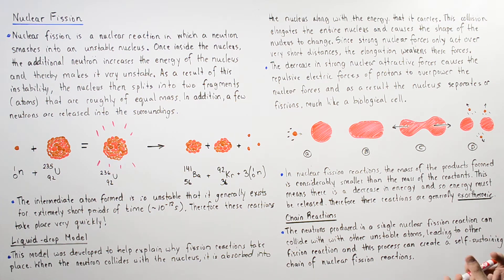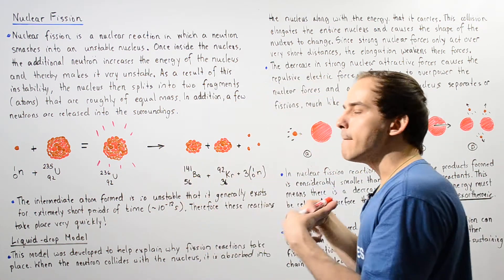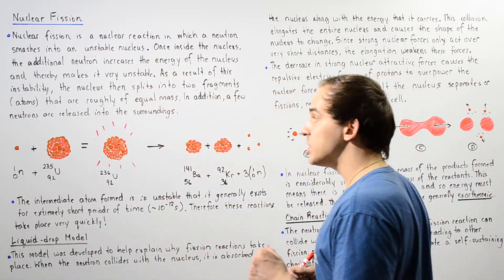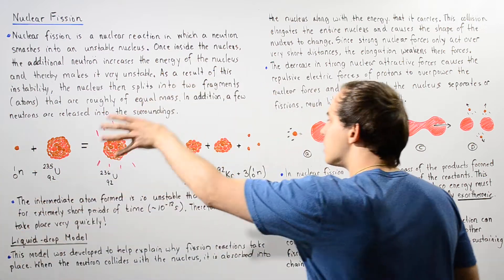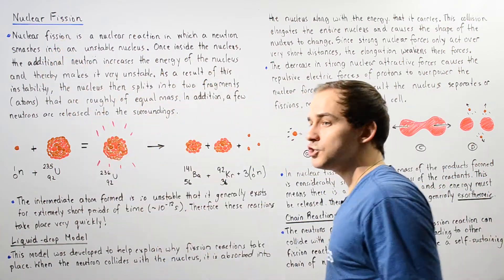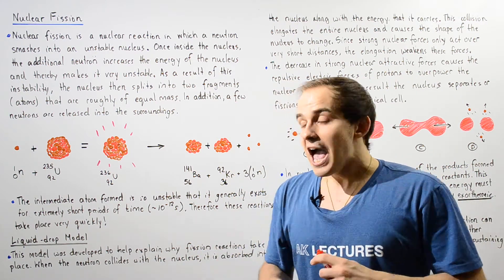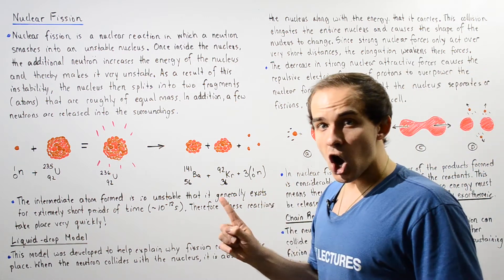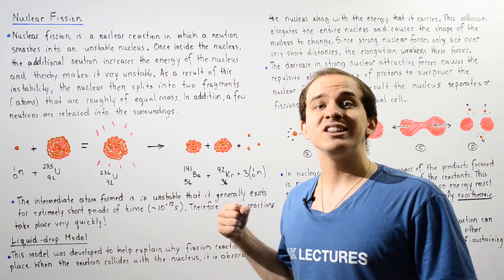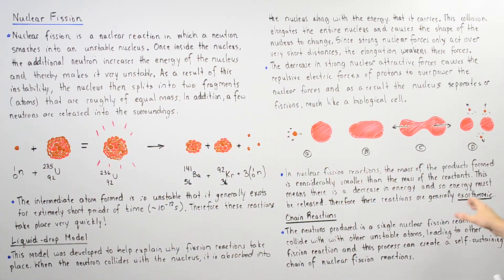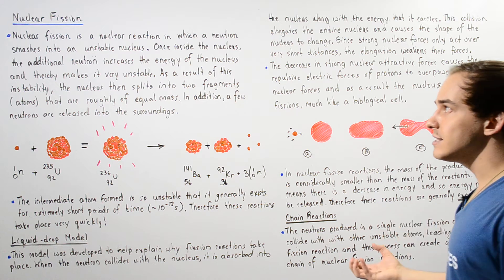In nuclear fission reactions, the mass of the products formed is usually much less than the mass of the reactants. This means there is a decrease in mass as we go from reactants to products, and because of this mass decrease a lot of energy is released. Nuclear fission reactions are therefore generally exothermic reactions.